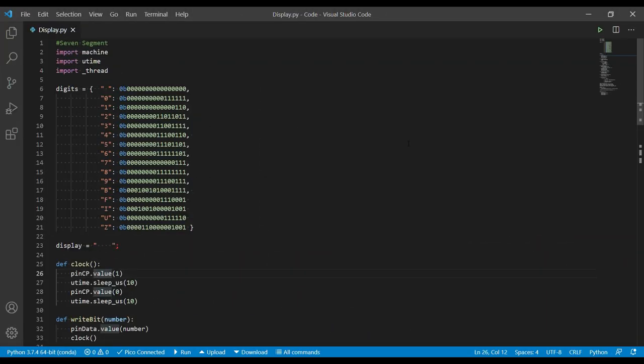So here's my test code for the display. We start out by including that machine library again, and time and a new library here called Thread. As the tooltip says, provides the operation to write multi-threaded programs. So we'll see that come into effect a little bit later.